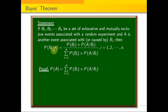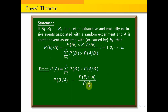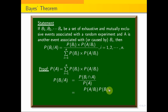P(Bi given A) is the formula. P(Bi given A) equals P(A intersection Bi) divided by P(A). So this should be a probability. I can write the formula: P(A given Bi) times P(Bi) divided by P(A).